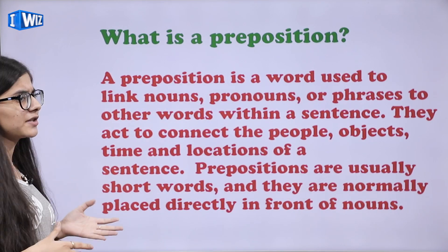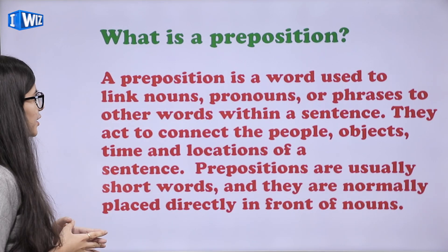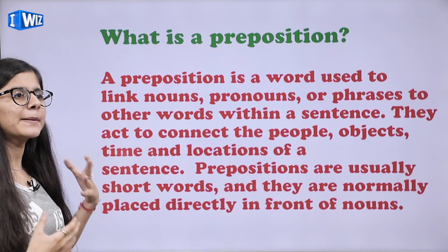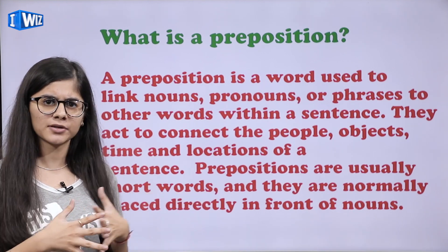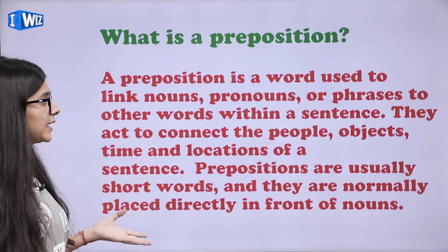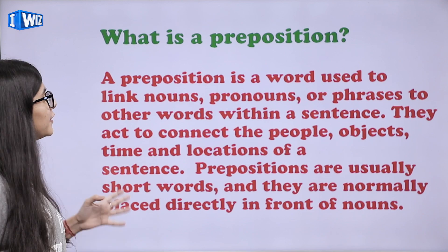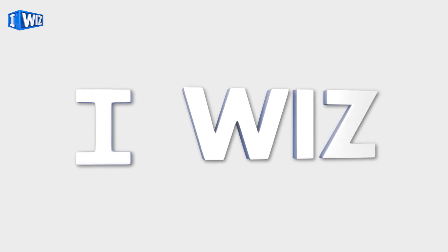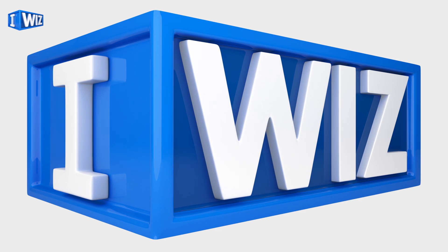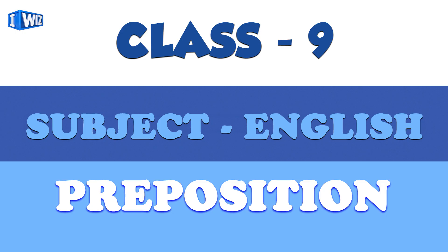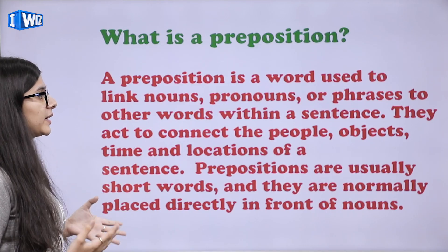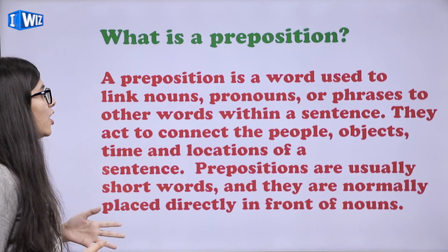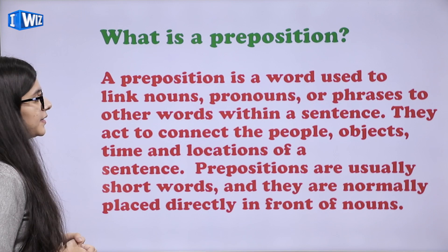What is a preposition? A preposition is a word used to link nouns. Matlab ki, a preposition is a word which we use to link nouns, pronouns, ya pher phrases ko baaki words se link karne mein use karte hain. So they act to connect the people, objects, time and location of a sentence.